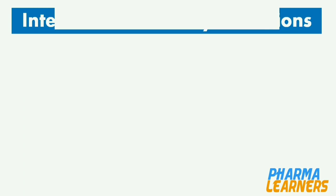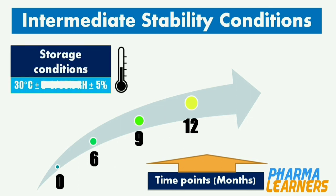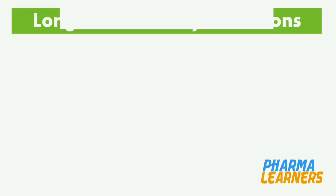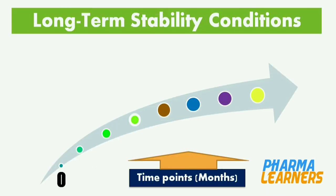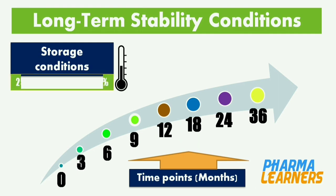For intermediate conditions, time points are 0, 6, 9, and 12 months, and storage conditions are 30°C ±2°C and 65% ±5% RH. For long-term conditions, time points are 0, 3, 6, 9, 12, 18, 24, and 36 months, and storage conditions are 25°C ±2°C and 60% ±5% RH.